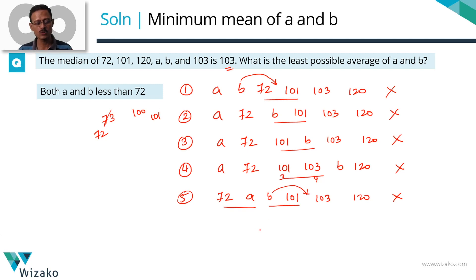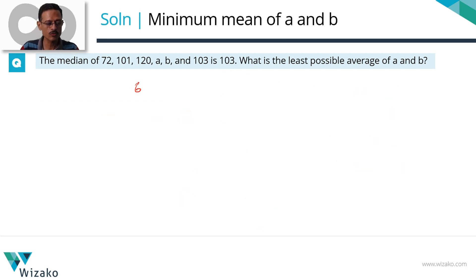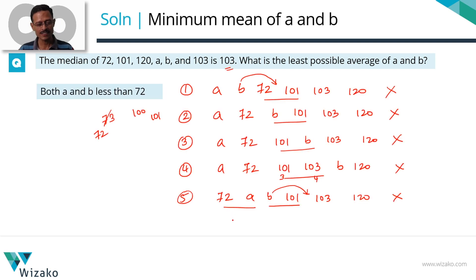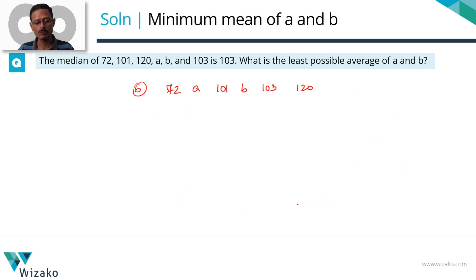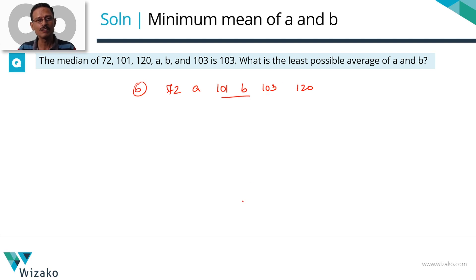Iteration 6: keep a between 72 and 101, push b one step further right — between 101 and 103. Ascending order: 72, a, 101, b, 103, 120. The middle two numbers are 101 and b. The largest value b can take is 103, giving a median of (101 + 103) / 2 = 102, not 103. Still not working.